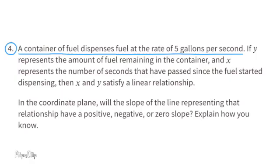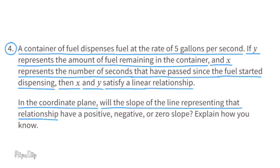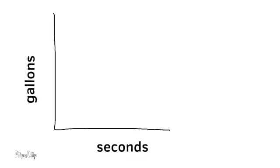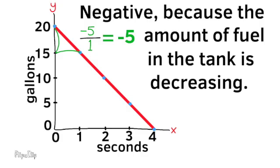Problem number 4. A container of fuel dispenses fuel at the rate of 5 gallons per second. Y represents the amount of fuel remaining and x represents the number of seconds passed. Will the slope of the line have a positive, negative, or zero slope? The line shows that as the seconds pass, the gallons decrease at a rate of 5 gallons per second. The rise goes down 5 gallons and to the right 1 second. This is a negative slope because the amount of fuel in the tank is decreasing.